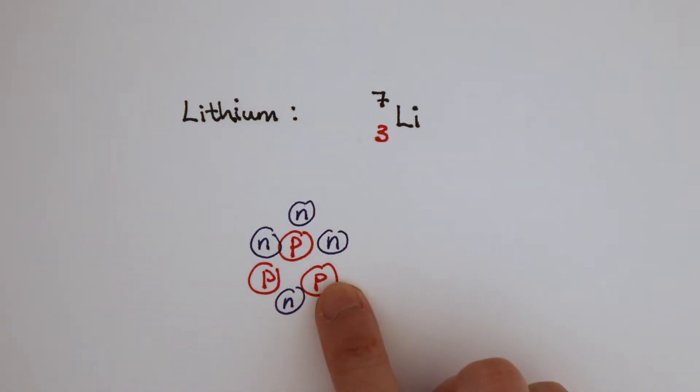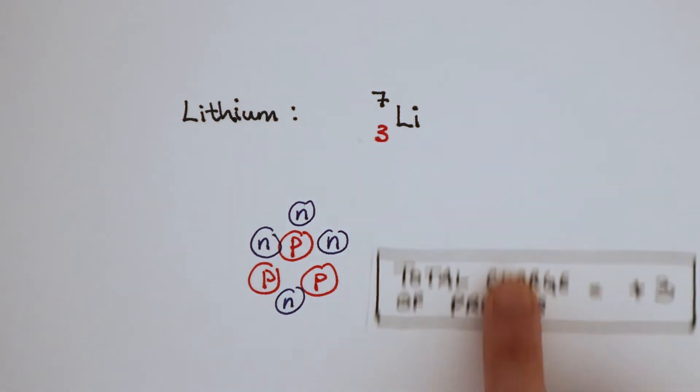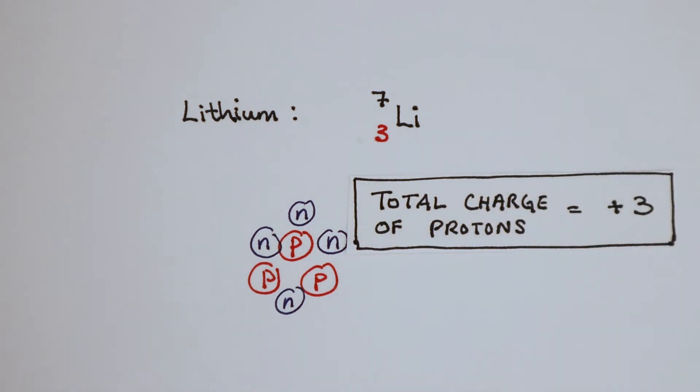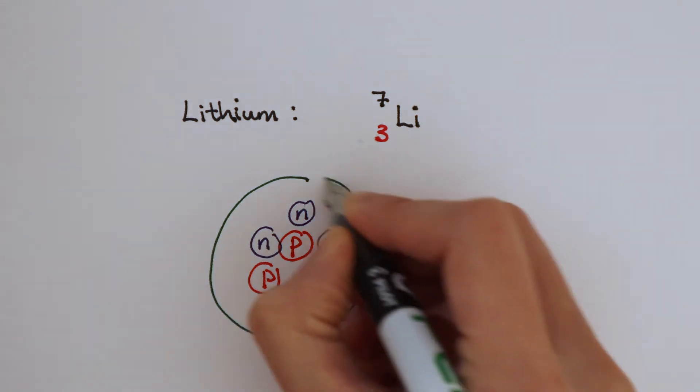Each proton has a relative charge of plus 1, so the total charge of the nucleus is plus 3. To balance the charge of the protons, we must have the same number of electrons as the number of protons.